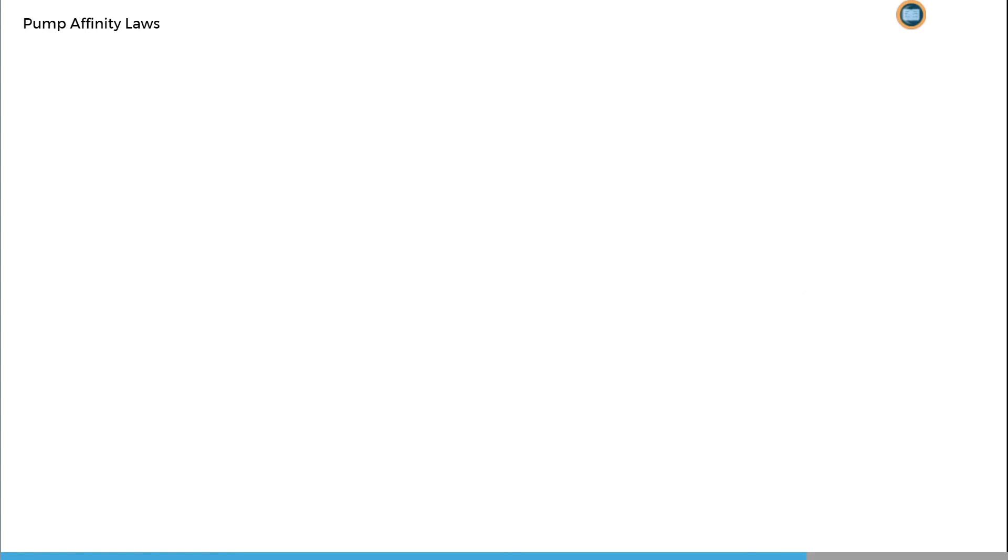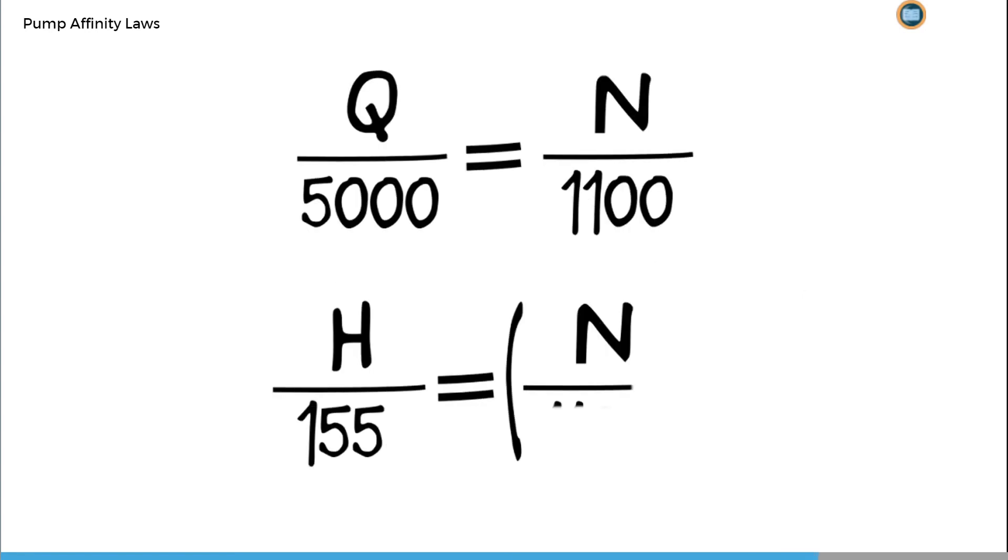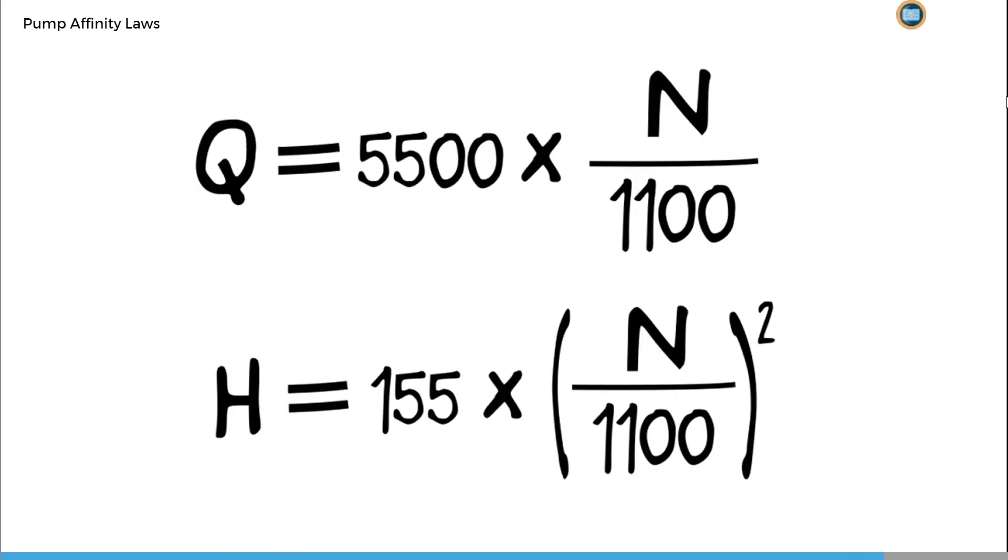Knowing this, our expressions can be written like this, where Q and H are the flow rate and head for equivalent point on a performance curve for any pump speed, N. Rearranging these expressions, we get the following.